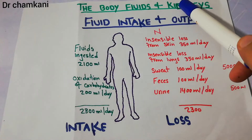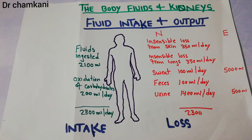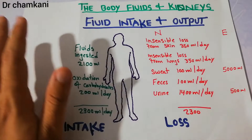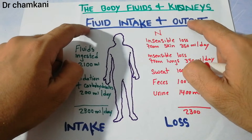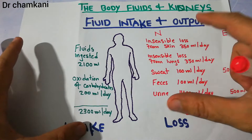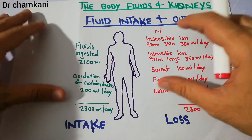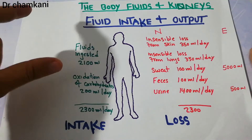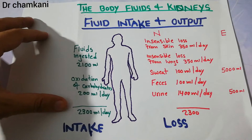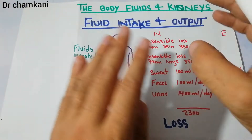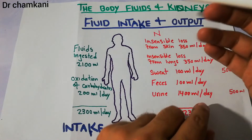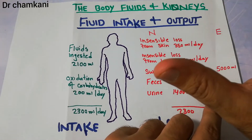Today we are going to start a new chapter about body fluids and kidneys. The body fluids are very closely related with the kidneys because the kidneys normally maintain the amount of fluid and electrolyte balance in the body, along with a few other important systems. In normal circumstances and during exercise and exertion, the body will try to maintain the amount of fluid and electrolytes.